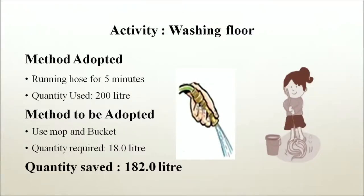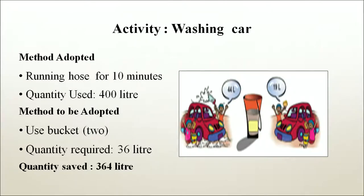For washing the floor: running a hose for 5 minutes uses 200 litres, whereas using a mop and bucket requires only 18 litres — saving 182 litres. For washing a car: running a hose for 10 minutes uses 400 litres, whereas using 2 buckets requires only 36 litres — saving 364 litres.